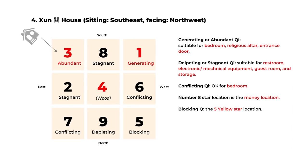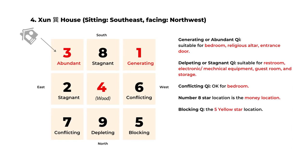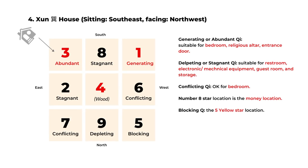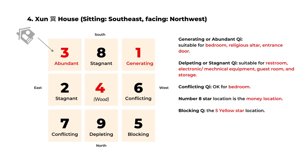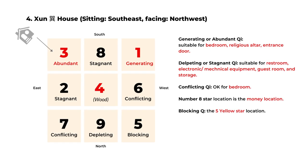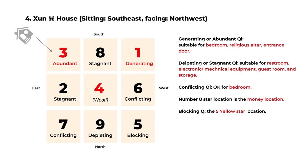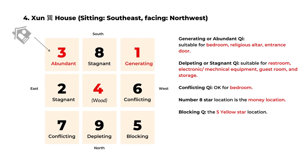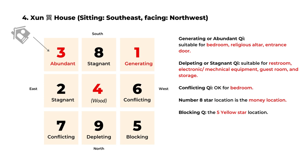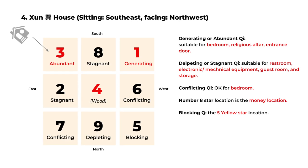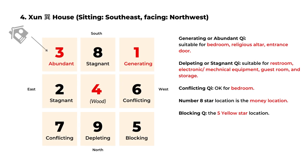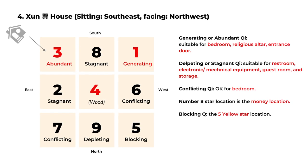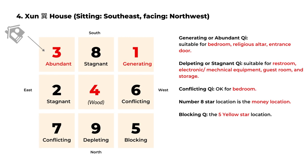The next chart is the Shun house — a house sitting on the southeast side and facing northwest. The number four star flies to the center with the wood element. The auspicious areas include the southwest for generating Qi and the southeast for abundant Qi. The number eight star for money luck is in the south.